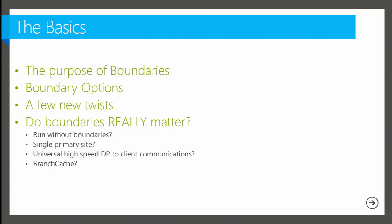You really do need boundaries, though it is possible in some cases to run without them — you don't get all of the controls we'd otherwise give you. Do you need boundaries with just a single primary site? Very likely yes — you don't need them for assignment necessarily, but you do need them for carving up your network into manageable portions so that you know predictably where traffic is going to flow and where it's not, and where clients are going to come get content. So you need them there.